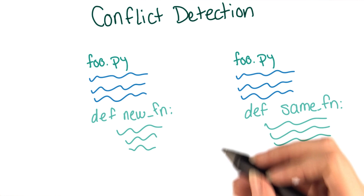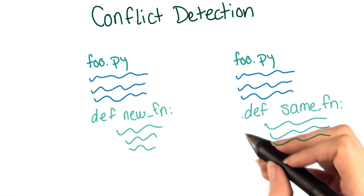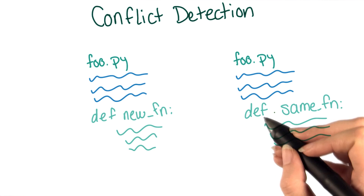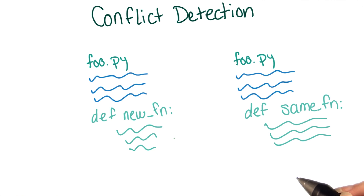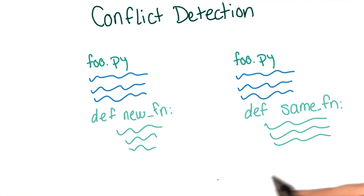So instead, git just assumes that if you're merging together two commits that have changes in the same general area, the authors will want to know about it, and have the chance to figure out for themselves which change to keep. This decision to ask the user whenever there's any ambiguity at all does sometimes lead to situations where it seems really obvious to you, as an expert on the content, how to resolve the conflict — but git brings it to your attention anyway.